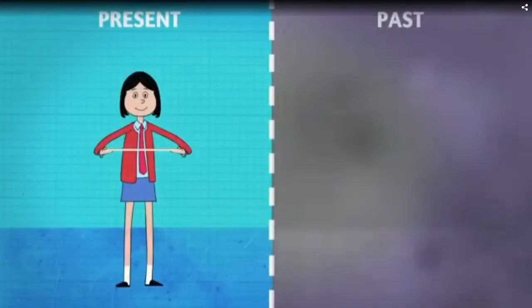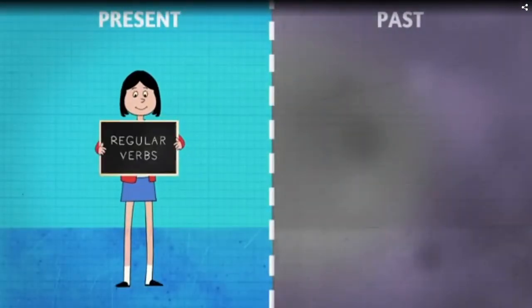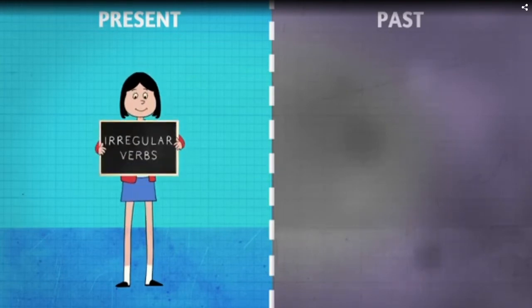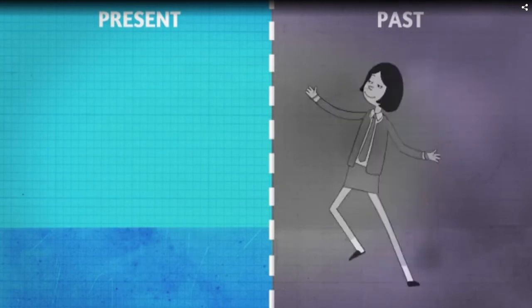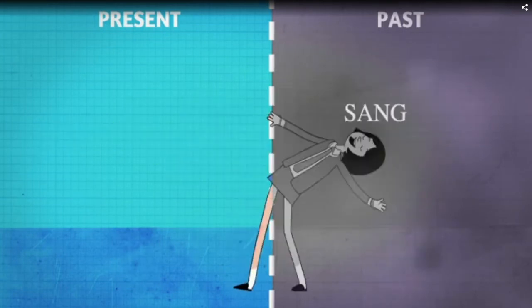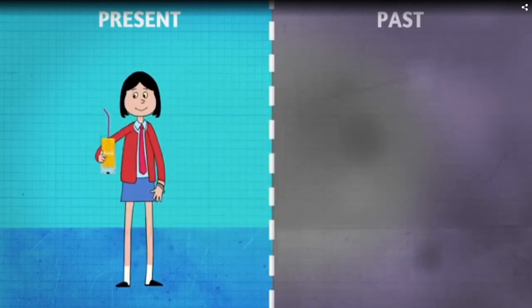Then we wrote a story. Wrote it? You mean wrote. But when we talk about the past, we add -ed to the verb. Yes, with regular verbs we do. But some verbs change completely in the past and they are called irregular verbs. Like teach and taught, sing and sang, drink and drank.